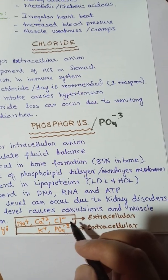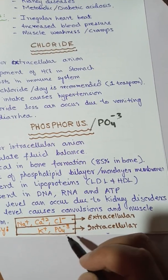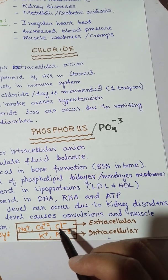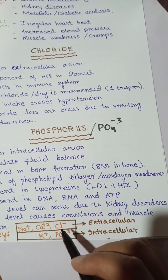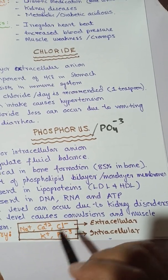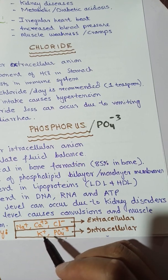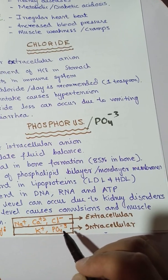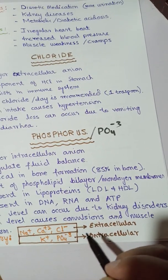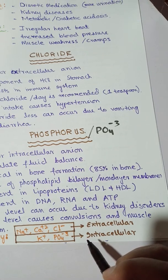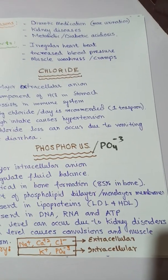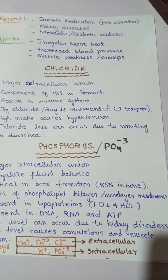Sodium and chloride are the major extracellular electrolytes, while potassium and phosphate are the major intracellular electrolytes. Thanks for watching the video.